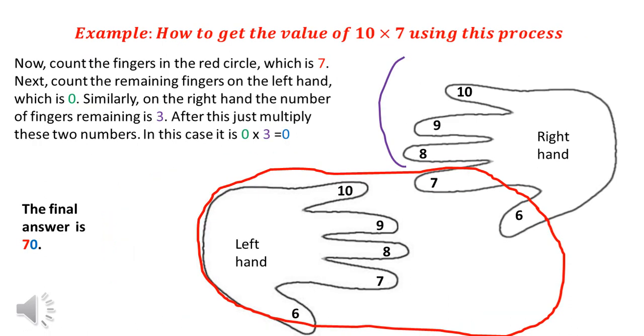To get the final answer, as before we count the fingers in the red circle. After that, we count the remaining fingers on both hands. As you can see in the diagram, the number of fingers in the red circle is 7, and the product of remaining fingers on both the hands is 0. So, the answer is 70.